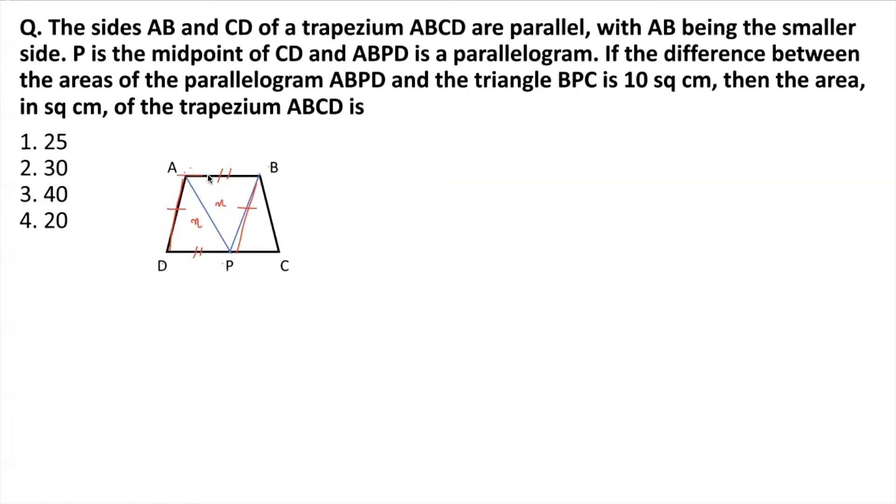Now, it is given that AB and CD are parallel, right? They're the parallel sides of the trapezium. That means the triangle ADP and triangle BPC, they have the same height because they are lying between the same two parallel lines. Again, P is the midpoint of DC.